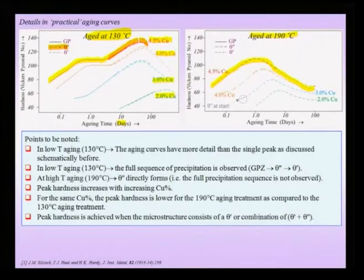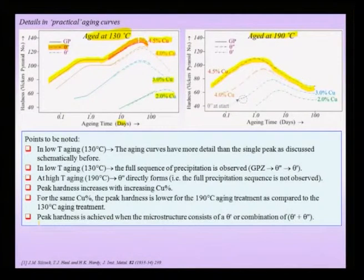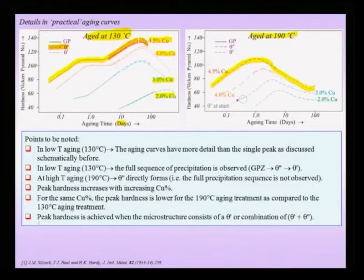GP zones are coherent; theta double prime is coherent; theta prime is only partly coherent and may become incoherent; theta is fully incoherent. For the aluminium 4% copper alloy aged at 130°C, there is a hardness curve with one peak, a plateau, then another peak — with GP zones present initially, then theta double prime, then a combination of theta double prime and theta prime, and eventually theta prime or full theta precipitates.